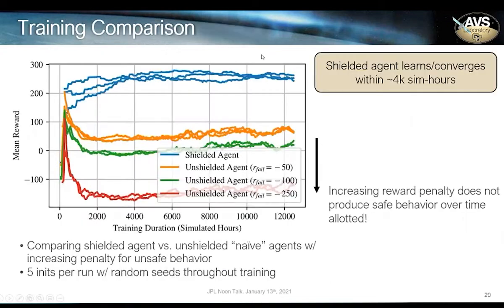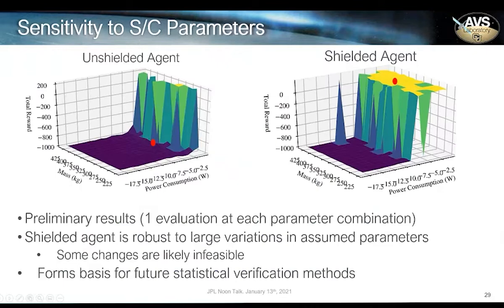When we apply the shielded learning approach and compare it with an unshielded approach with increasing penalties for failure, the shielded approach converges much more quickly to the target policy, and the unshielded approaches take far longer. The speed of convergence is not improved by penalizing failure. When we look at generalization, the shielded agent winds up competitive across a larger range of environment parameters than the unshielded agent. The shield actually does buy you robustness in terms of things like spacecraft inertia and power consumption, which is promising for generalization down the line.